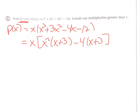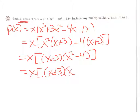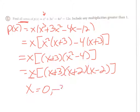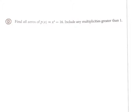Now I'll factor the inside by grouping. Taking out x² from the first two terms leaves (x + 3); taking out −4 from the last two also leaves (x + 3). Since (x + 3) appears twice, I factor it out, leaving (x + 3)(x² − 4). But x² − 4 is a difference of squares: (x + 2)(x − 2). So the four zeros are 0, −3, −2, and +2 — matching the degree of x⁴.